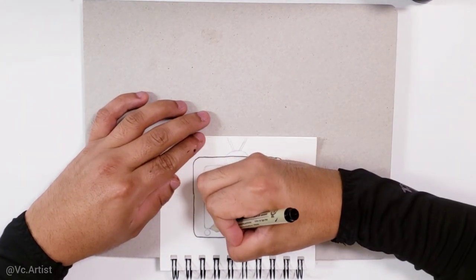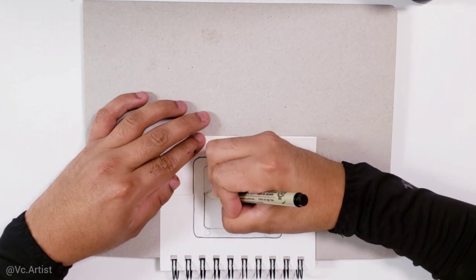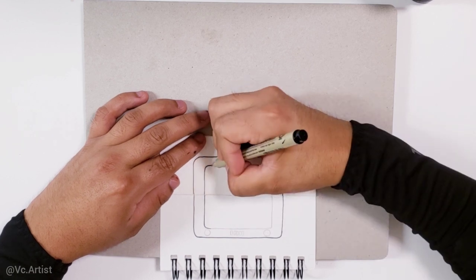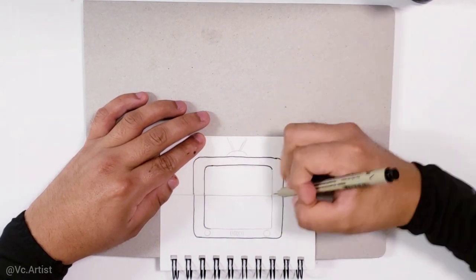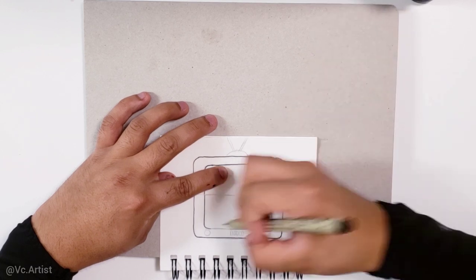Okay, once we do this, we're going to draw another box in the middle, or inside the box that we just drew, and this is going to be the screen and also the face of the robot.